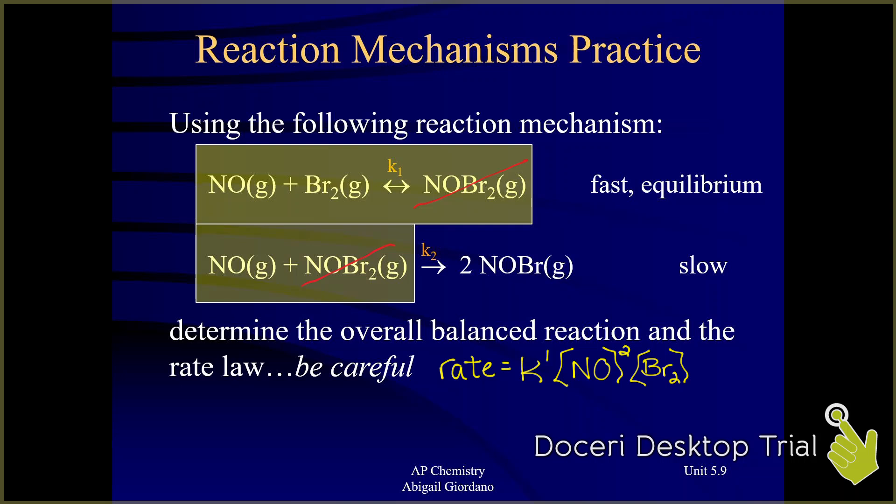Okay, but let me just make sure this is clear. You only have to use this box out method if the slow step is not first. If it's first, you can just use our regular way that we did in the past.